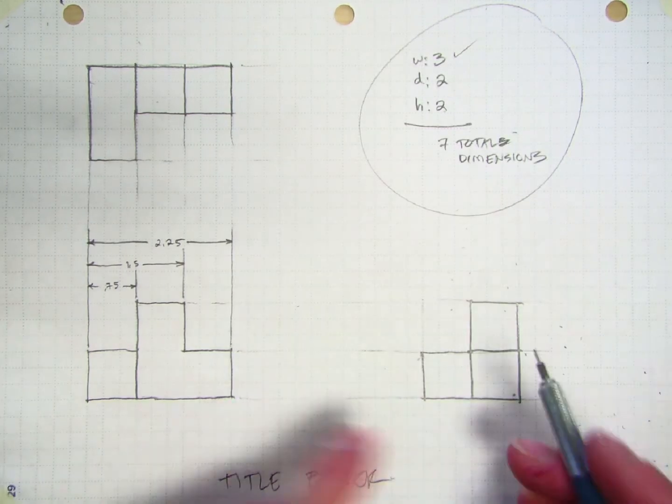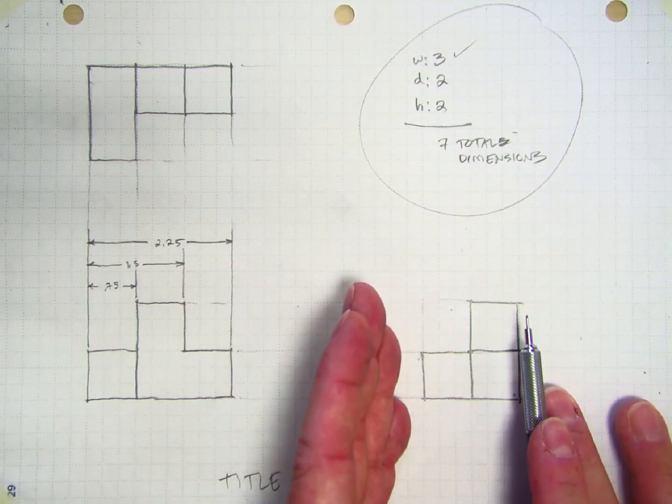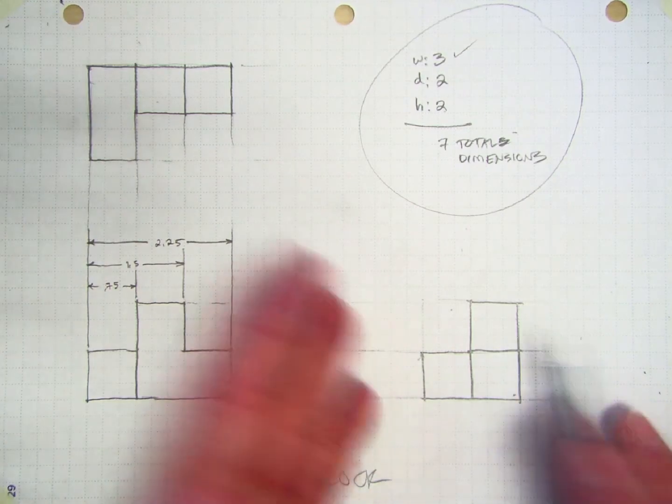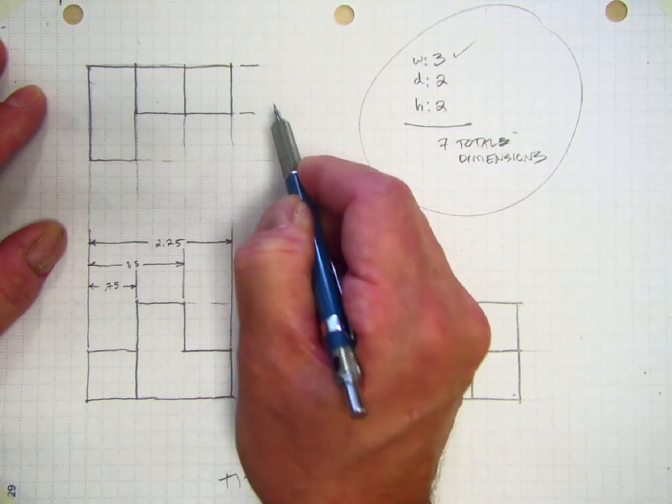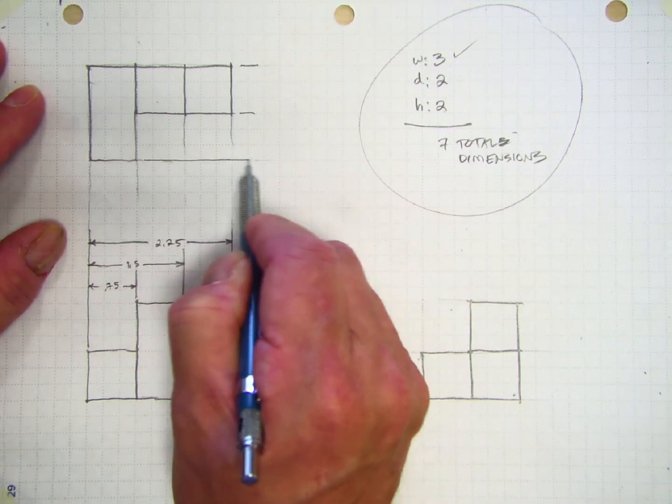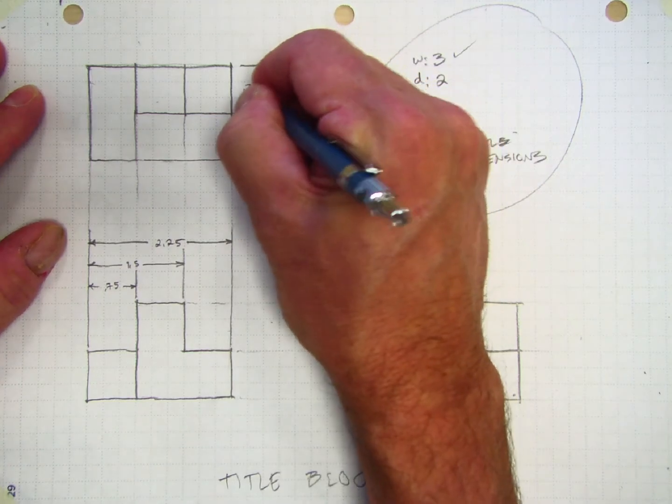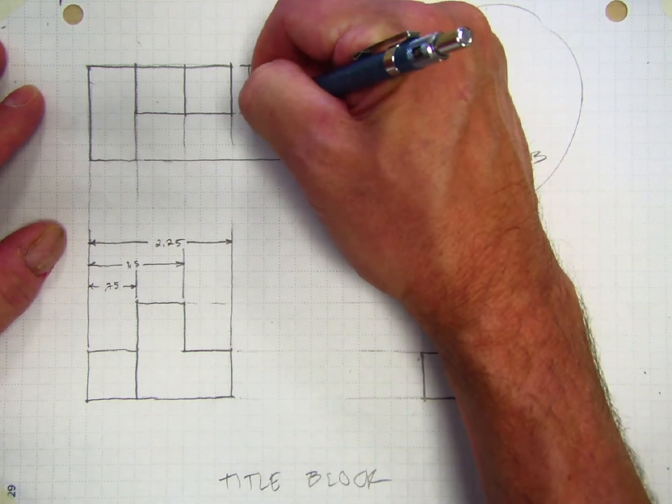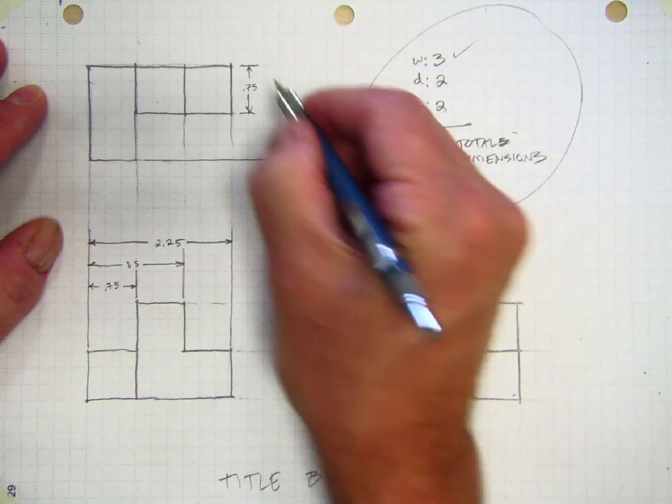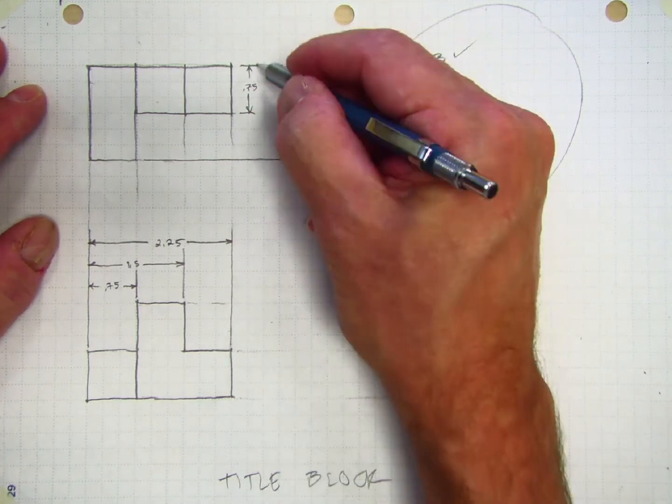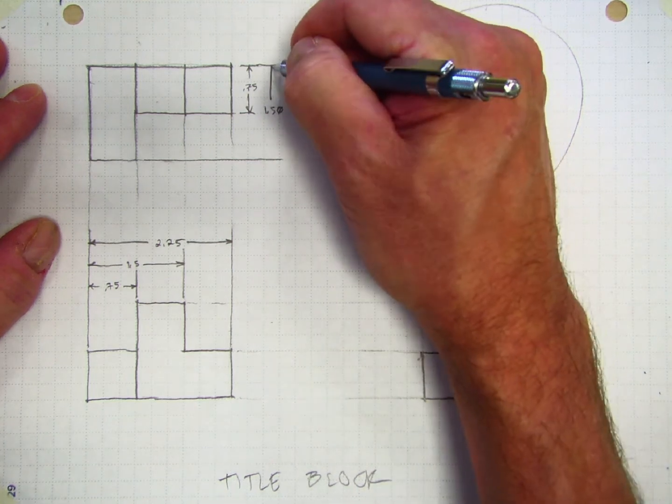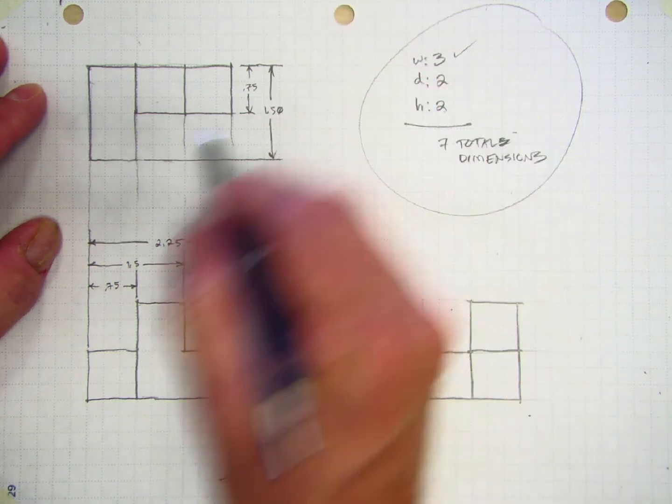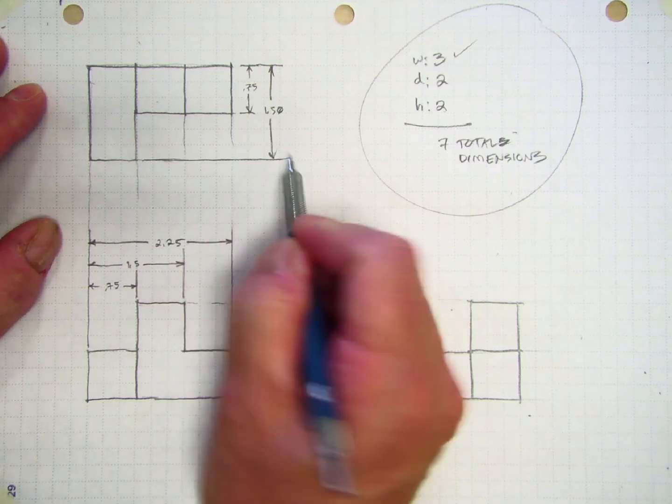The depth dimensions in this part, we really have an option to put it on the top view or on the right side view. It doesn't really matter which. I'm going to start with my extension lines, put my first dimension here. Notice we don't turn the text sideways. That's a standard called unidirectional dimensioning. We just write the text horizontally, even for the vertical dimensions.